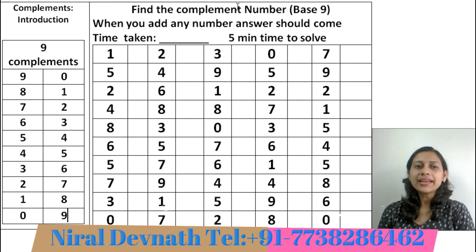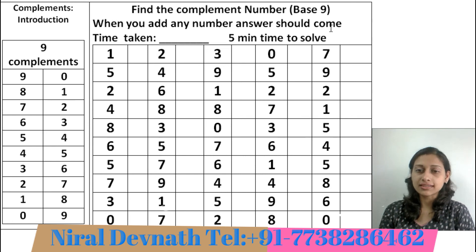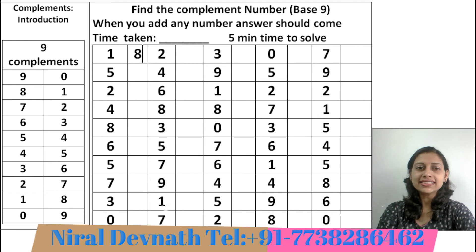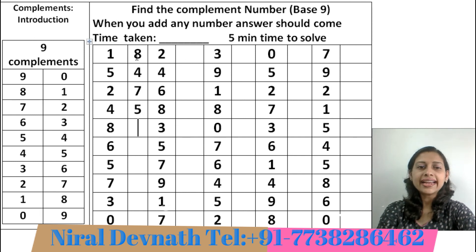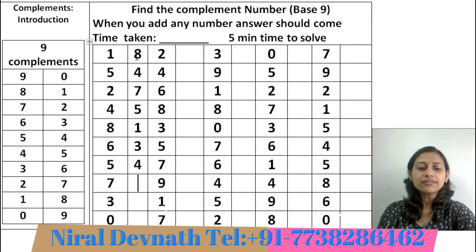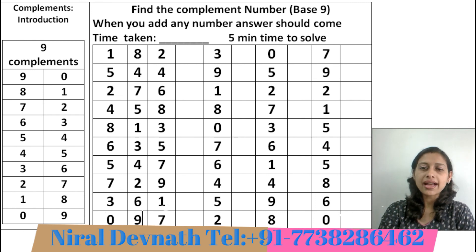Find the complement number, base 9. When you add any number, the answer you should get is 9. Let's start the stopwatch. I am doing the first column for you: 1's friend is 8, 5's friend is 4, 2's friend is 7, 4's friend is 5, 8's friend is 1, 6's friend is 3, 5's friend is 4, 3's friend is 6, 0's friend is 9. This first column I have done.